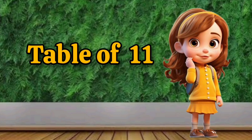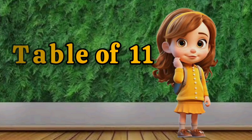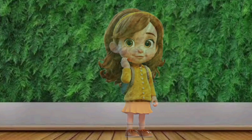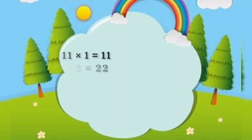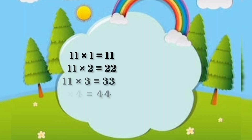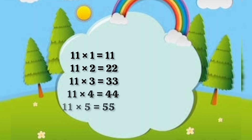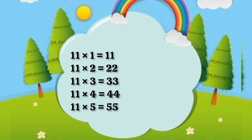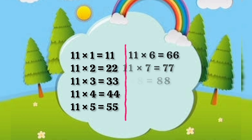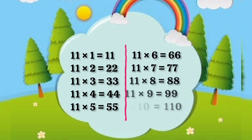Table of 11. 11 1s are 11, 11 2s are 22, 11 3s are 33, 11 4s are 44, 11 5s are 55, 11 6s are 66.